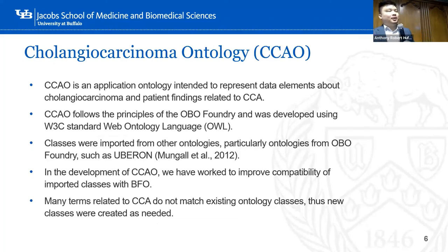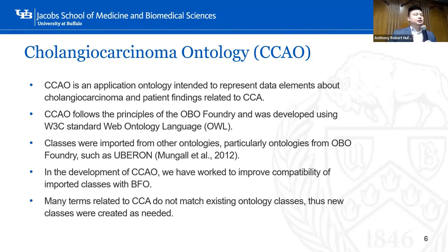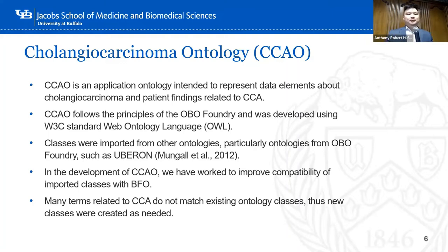Let's talk a bit about the Cholangiocarcinoma Ontology, or CCAO. CCAO is an application ontology intended to represent data elements about cholangiocarcinoma and patient findings related to CCA — the six forms I was talking about before. CCAO follows the OBO Foundry principles and was developed using Web Ontology Language. Classes were imported from existing ontologies, especially from the OBO Foundry, such as OBO ontologies. In the development of CCAO, we worked to improve the compatibility of imported classes with BFO. Many terms related to CCAO in our forms did not match with existing ontology classes, so we created new classes as needed.